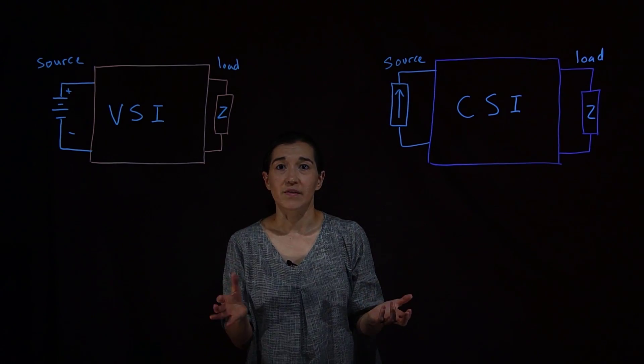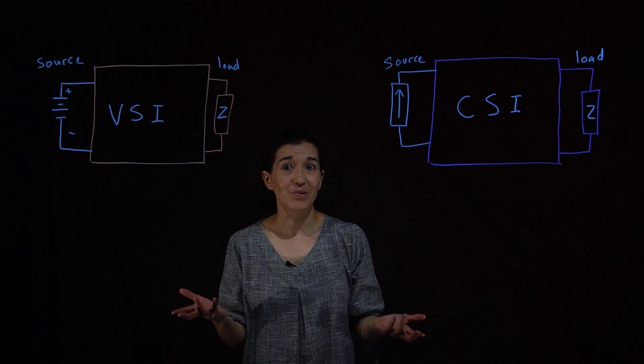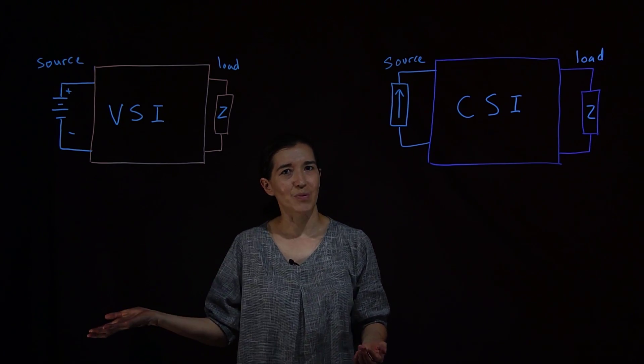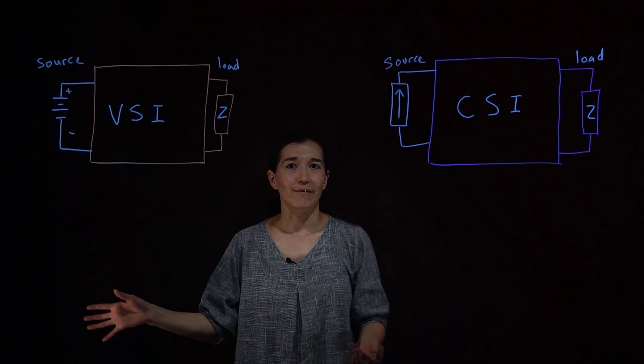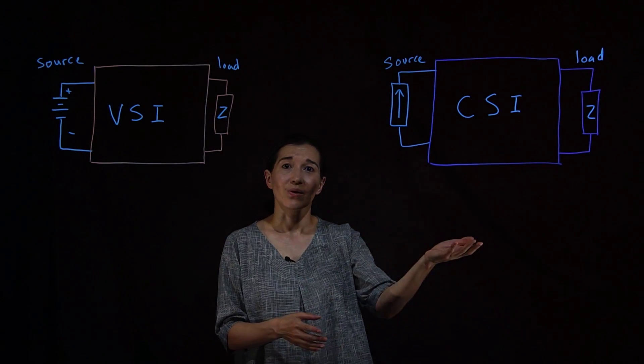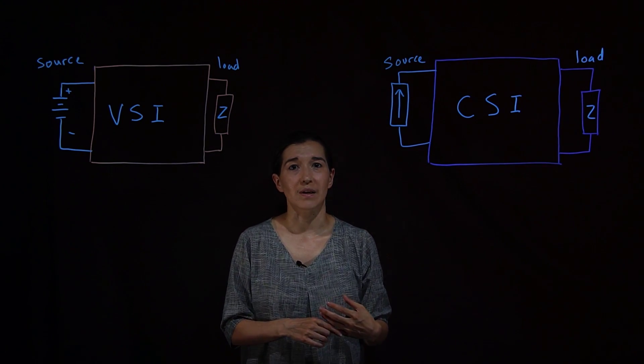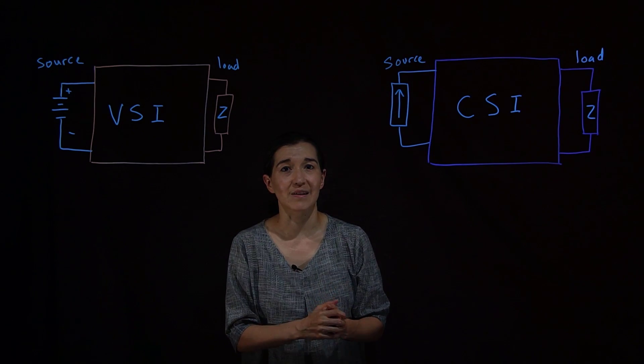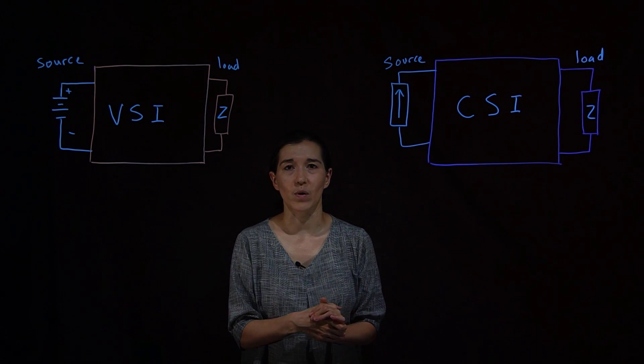Both of these types of inverters are commonly used. Voltage source inverter is a little more common in various applications like home appliances, things like that. But the current source inverter is also used in various applications, especially larger grid connected systems as well.